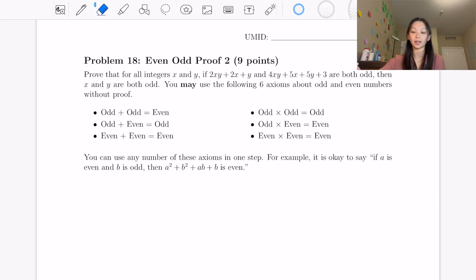Hi, in this video we're going to be covering this FRQ question called Even Odd Proof. This question asks us to prove that for all integers x and y, if 2xy + 2x + y and 4xy + 5x + 5y + 3 are both odd, then x and y are both odd.